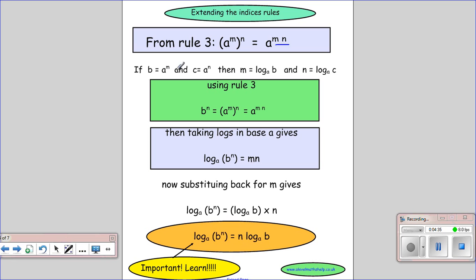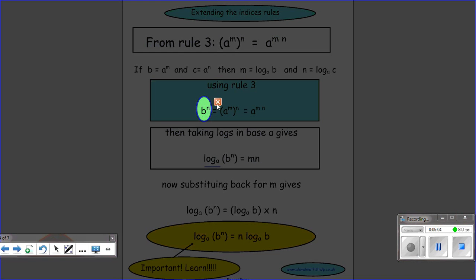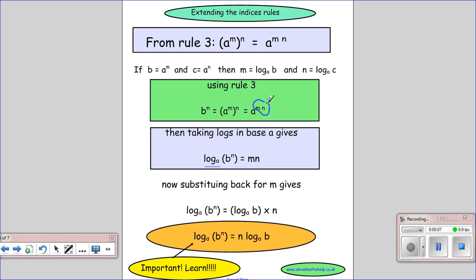So again, we define our b and our c and our m and our n in the same way. We take b and we raise it to the power of n, which is the same as raising a to the m to the power of n, which gives us, using our rule, that b to the n equals a to the m n. So we're doing all these in base a, so we're rewriting this in the log form. So we have log in base a of the number that we're sort of trying to get will equal the power.